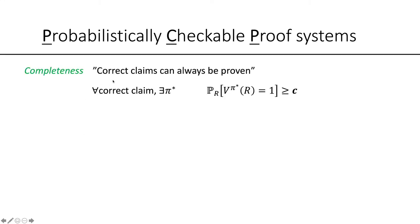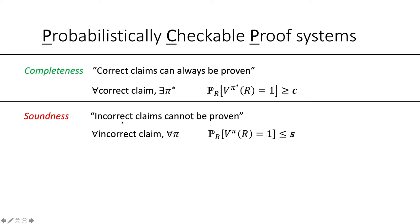What do we want out of a PCP? We want it to be complete, which means that correct claims can always be proven. Any correct claim always has some proof that convinces the verifier with very high probability. Think of C as a number that's very close to 1 or maybe even 1. For soundness, any incorrect claim cannot be proven. We want that if you give the verifier an incorrect claim, no matter what proof you give, the verifier will very often reject or will accept with very small probability. Think of S as a constant close to zero.